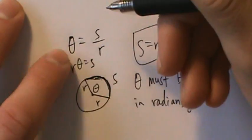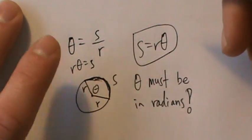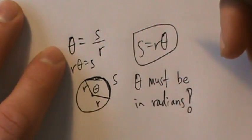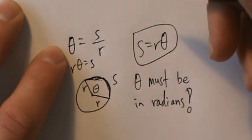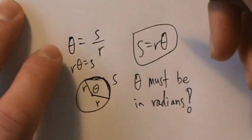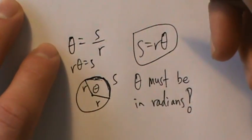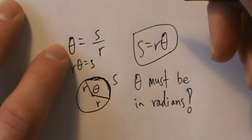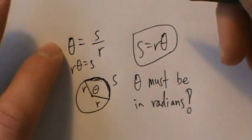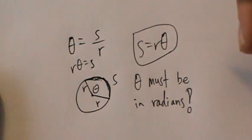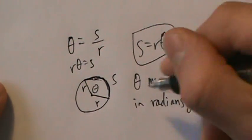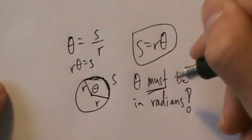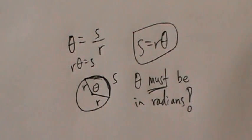The reason theta must be in radians is that this is how radians were defined: theta equals s over r. That's how we define radians. So if theta is not in radians, this formula doesn't apply.